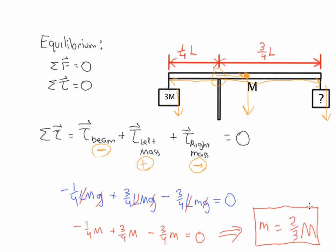The mystery mass is two-thirds capital M — two-thirds the mass of the beam. Essentially, we solved this by recognizing that in equilibrium the sum of torques is equal to zero, figuring out the torques for the three individual components (the beam of mass M, the block of mass 3M on the left, and the mystery block on the right), and then writing down and solving that equation for the unknown lowercase m. And there you go — thank you very much.